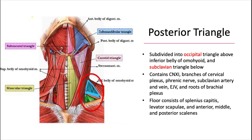And the subclavian triangle is below that inferior belly of the omohyoid. The posterior triangle as a whole contains cranial nerve 11, branches of the cervical plexus, the phrenic nerve, subclavian artery and vein, the external jugular vein, and roots of the brachial plexus.